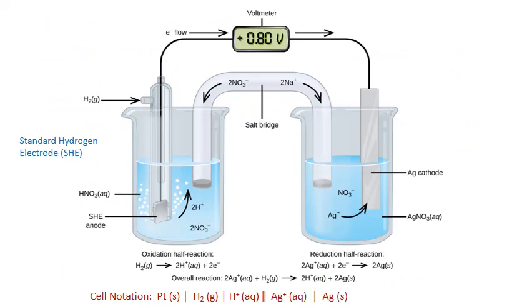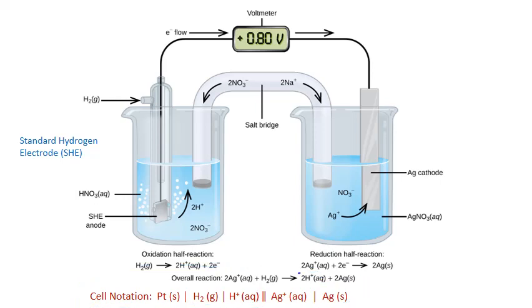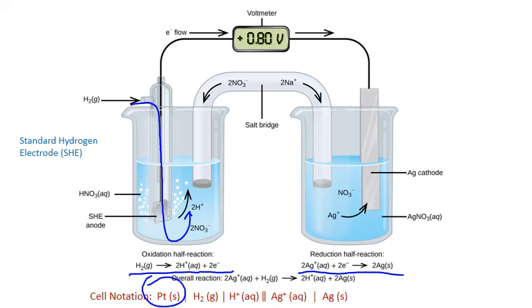Here's a different electrochemical cell setup with cell notation written at the bottom. The reduction half reaction on the right is the same as before — silver ion is reduced to solid silver metal. On the left, however, our oxidation half reaction is the oxidation of hydrogen gas to hydrogen ion. The electrode used in this half cell is known as a standard hydrogen electrode, or SHE, which bubbles hydrogen gas through the solution past an inert piece of platinum metal. Platinum is listed as part of the anode in the cell notation because it serves as the surface for electron transfer, but unlike the copper strip in the last example, the platinum itself does not take part in the oxidation half reaction — so it is known as an inert electrode.